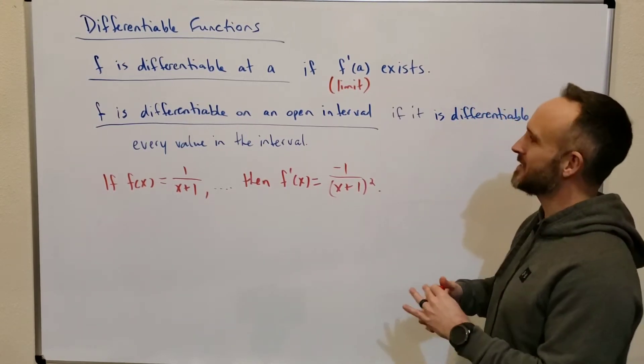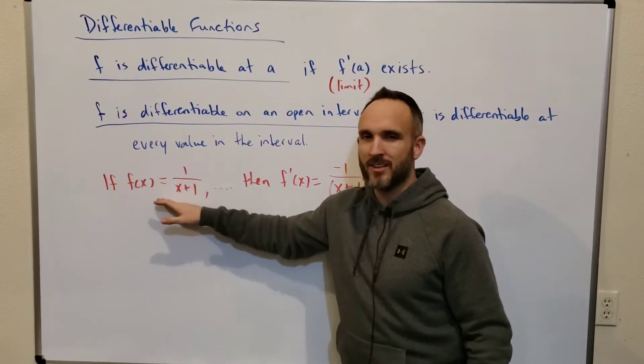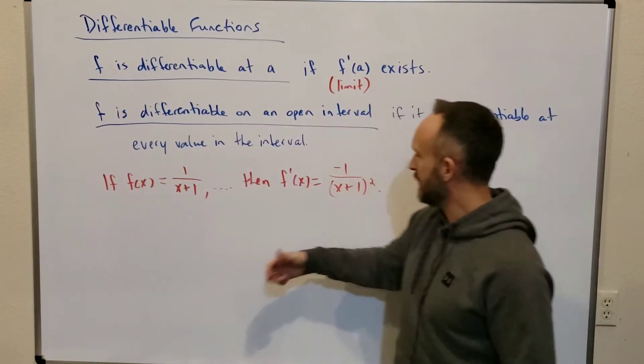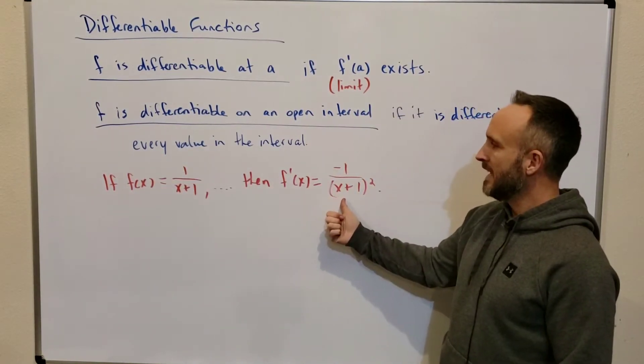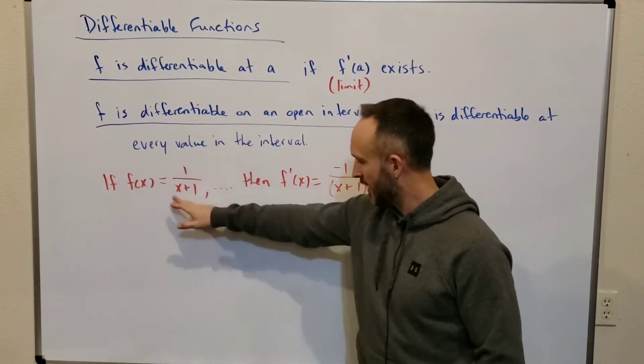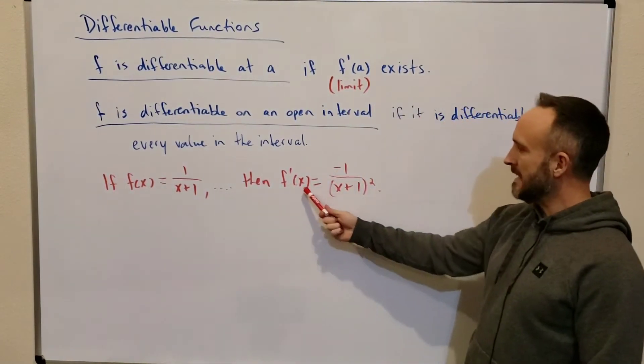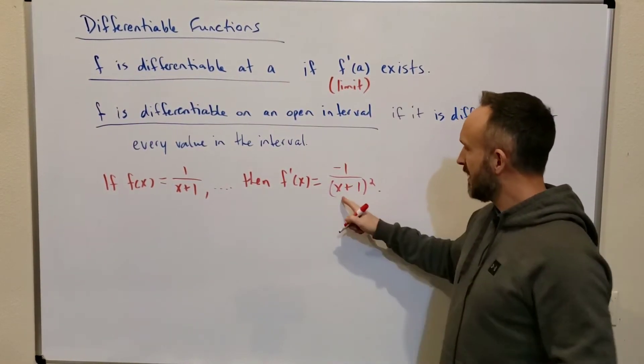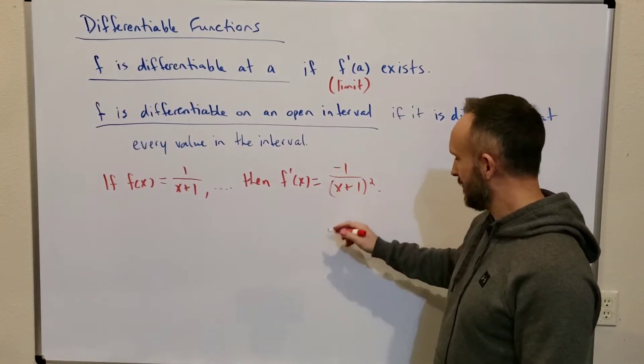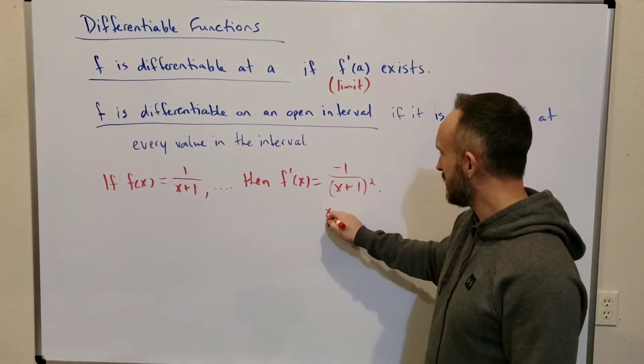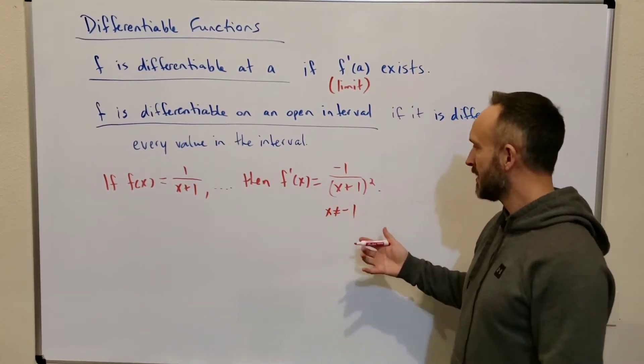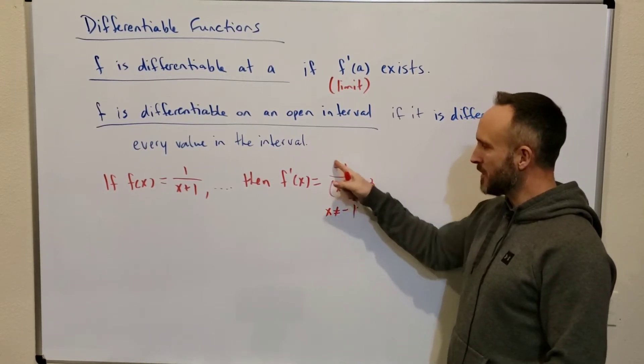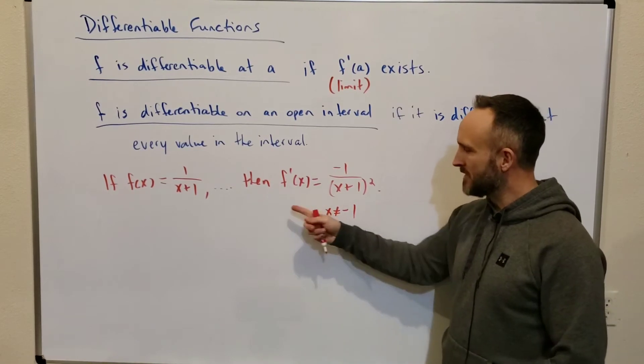So let's discuss the differentiability of the function f. Well, when you take the derivative of f, you get this formula. And the function f is differentiable if this formula exists at that value. Well, this formula can only be calculated if x does not equal negative 1. If x is negative 1, you'd be dividing by 0. We can't do that.